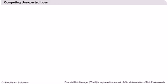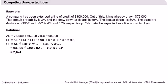Let us learn to calculate unexpected loss through an example. This example gives the value of total commitment, outstandings, loss given default, expected default frequency, their variances, and drawdown at default. Using the expression for adjusted exposure from the previous session, we get the value of adjusted exposure as $90,000.